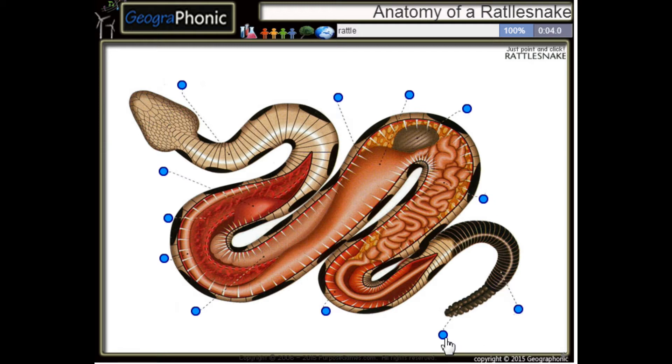This is the rattle of the snake. Here we see a belly scale. This is of course its tail.